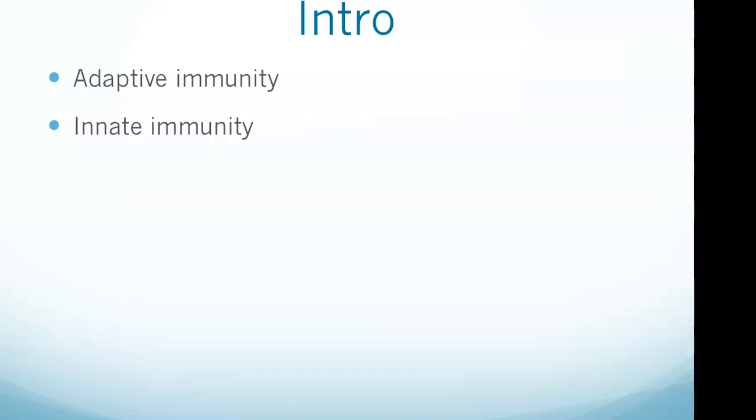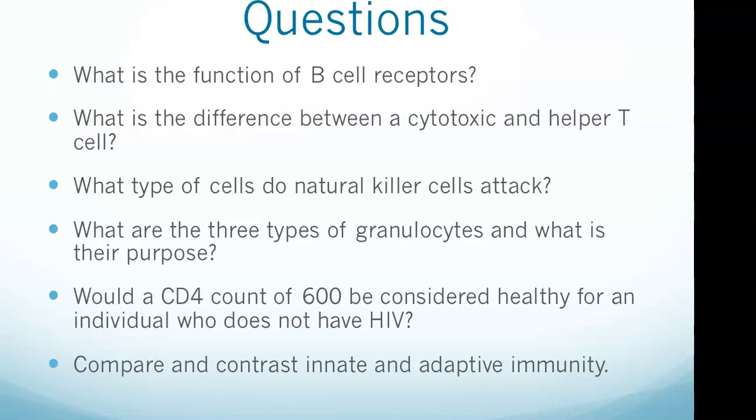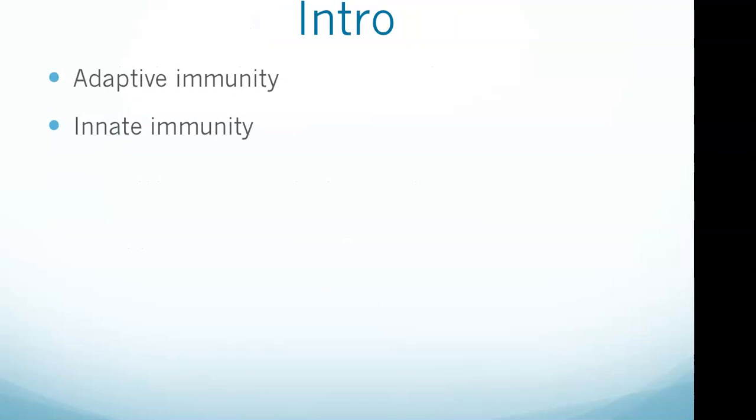Looking at adaptive and innate immunity, adaptive first. Adaptive immunity is slower to activate, specifically targets a pathogen, and forms memory cells. B cells, T cells, and antibodies are part of adaptive immunity. Innate immunity is quick to respond, not specific to individual pathogens, and does not form memory cells. Examples include macrophages, natural killer cells, and granulocytes. That was the last question, compare and contrast innate and adaptive immunity.